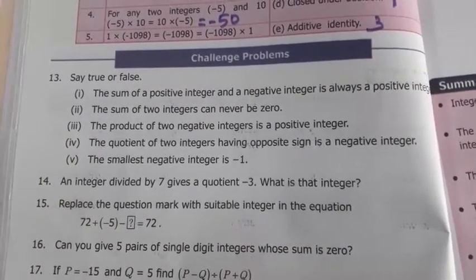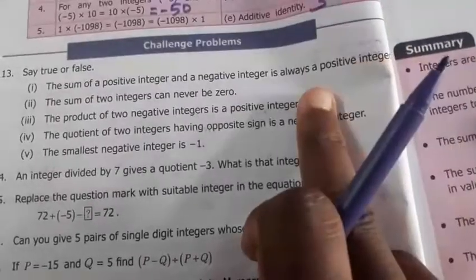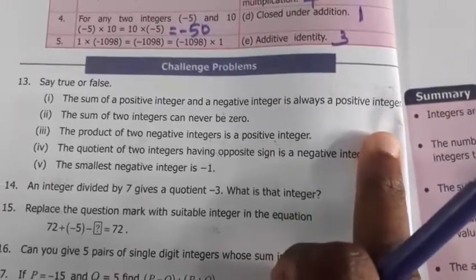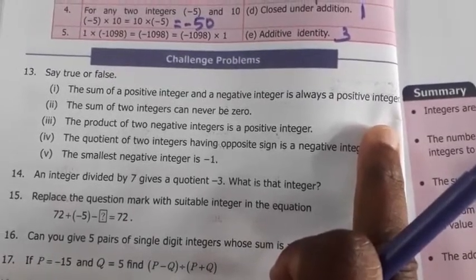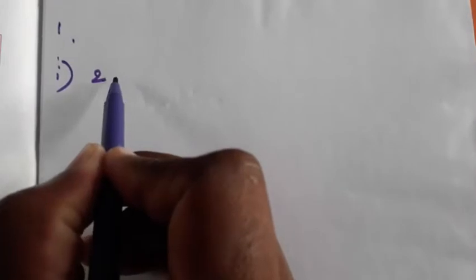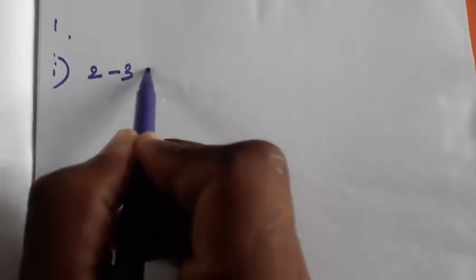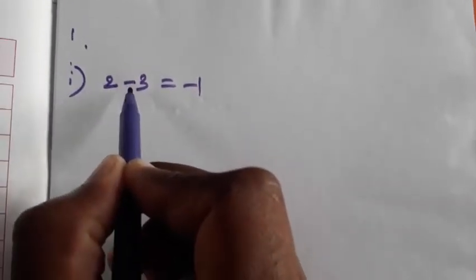The sum of a positive integer and negative integer is always a positive integer — true or false? For example, take positive integer two and negative integer minus three. Two plus minus three equals minus one, because here we have opposite signs, so we subtract.